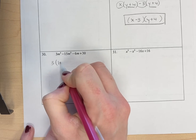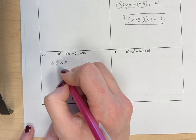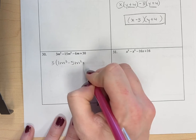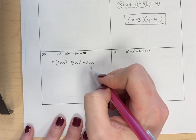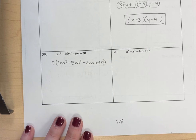So 3m cubed divided by 3 is 1m cubed, or just m cubed. Negative 15m squared divided by 3 is negative 5m squared. Negative 6m divided by 3 is negative 2m. And then 30 divided by 3 is 10. So I divide everything by 3.